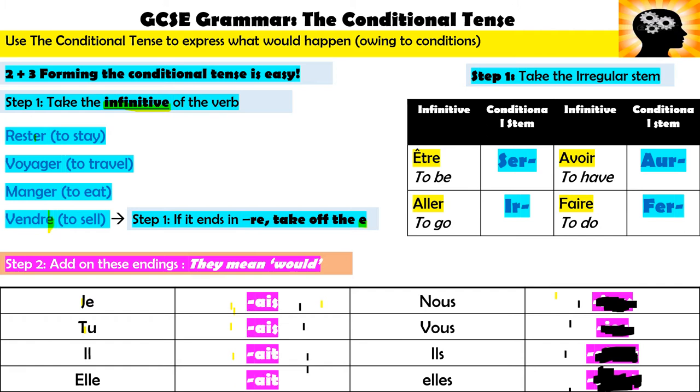It goes A-I-S, A-I-S, A-I-T, A-I-T, I-O-N-S, I-E-Z, A-I-E-N-T. Once you've learned these verb endings you've got them for life and you can use them.